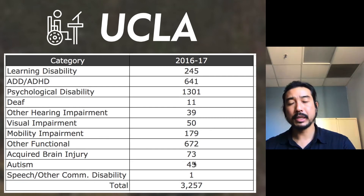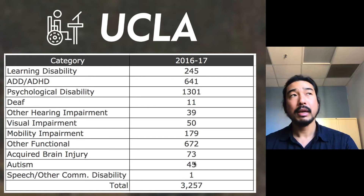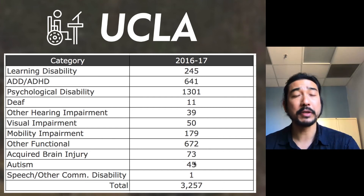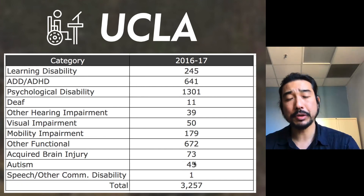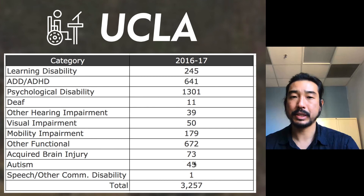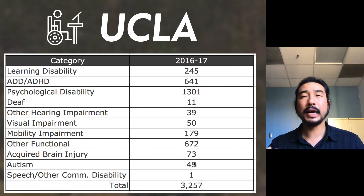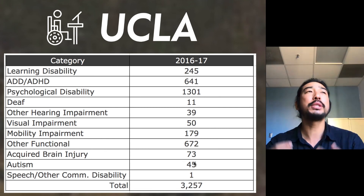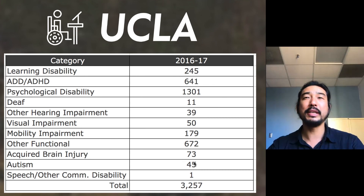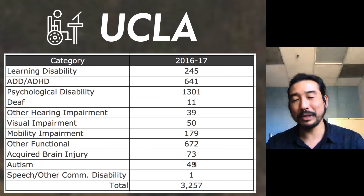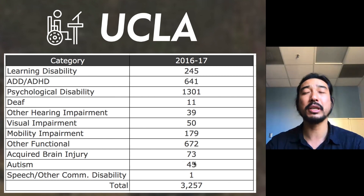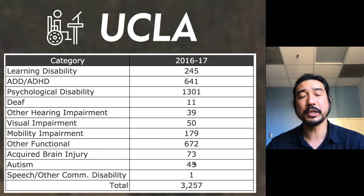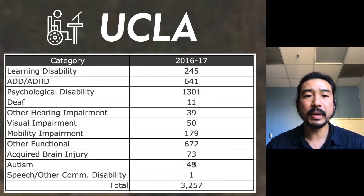There are around 3,500 students receiving accommodations at UCLA, but actual survey data from UCOP — the University of California Office of the President — shows around 16%, or 7,000 students at UCLA, have or declare a disability. About half of those students are receiving accommodations. When you design and develop, don't think of students with disabilities as a small special group — we're servicing a large contingent of the student and faculty population. I hope these numbers give you insight into why disability and accessibility matter so much at UCLA and in the country at large.